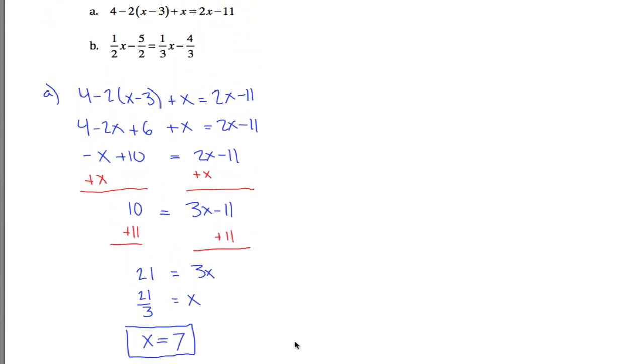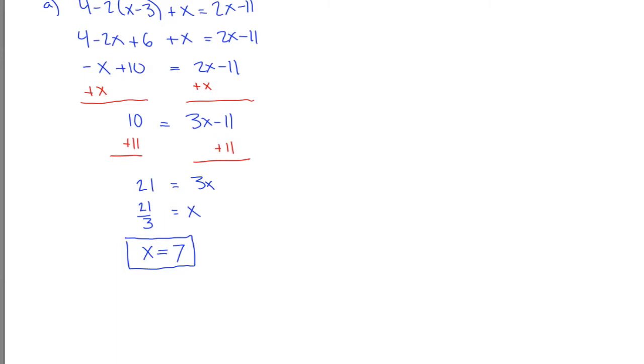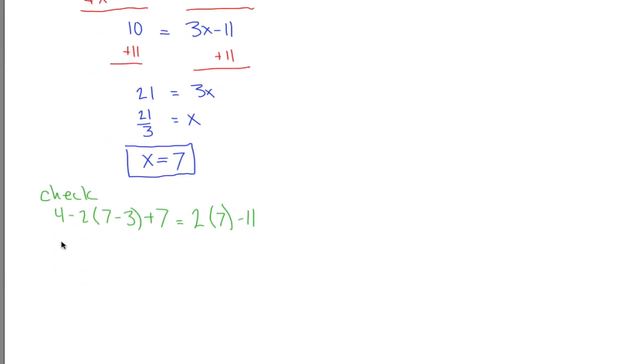And then it says we can check our answer by plugging it back into the original equation. So maybe I'll do that down here. Let's check. If I took 4 minus 2 times 7 minus 3, instead of writing x, I wrote a 7. And then added 7 for that x, what I want to check is, is that the same as 2 times 7 minus 11? Well, let's see. Over here, I can get rid of the parentheses, or I can work inside the parentheses first. 7 minus 3 is 4.